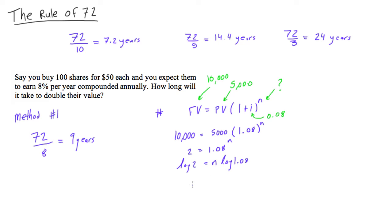Alright, so then we can just rearrange again. So we'll get n is equal to log of 1.08 divided by log of 2. And if you punch this in your calculator, we will find that n is going to be equal to 9.00647 years.